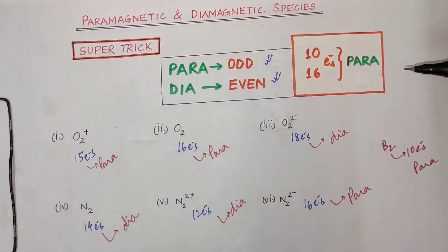Let us remember 10 electrons and 16 electrons. What is the species? Even number of electrons. What is it? Para.